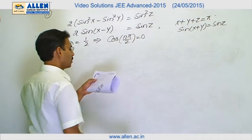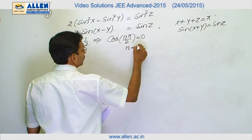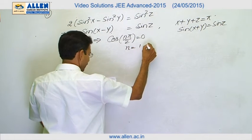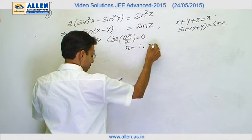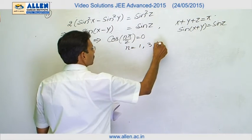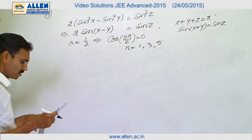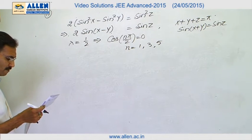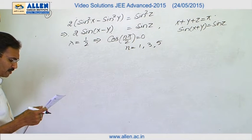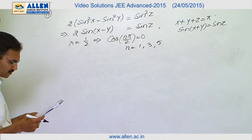This is true for odd values of n: 1, 3, 5. I have only three choices. So the right answer for part A will be p, r, and s.